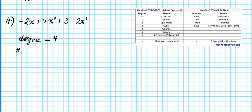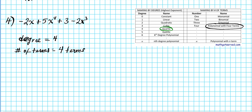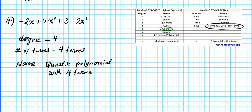The number of terms is four — we count 1, 2, 3, 4. A fourth degree polynomial is called a quartic, and four terms means we name it as a polynomial with four terms. Combining both, the name of this polynomial is a quartic polynomial with four terms.